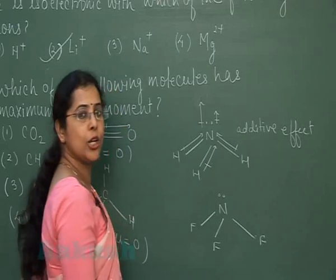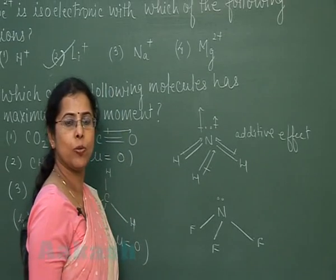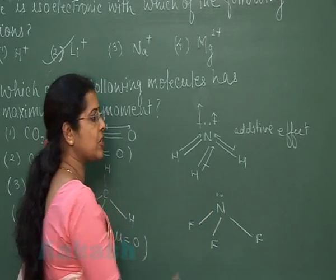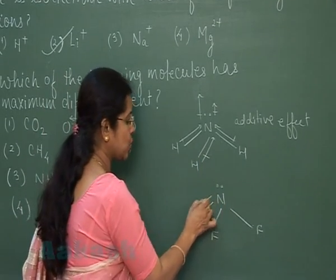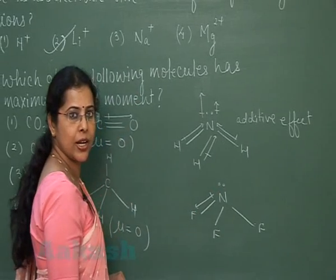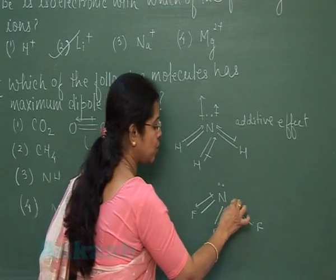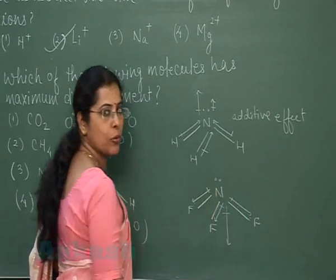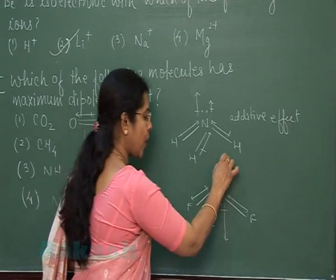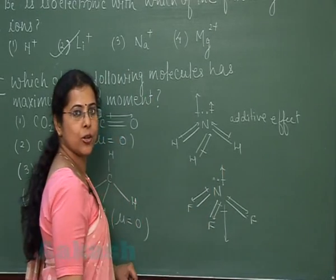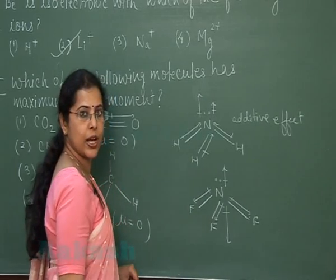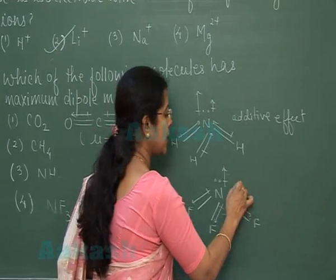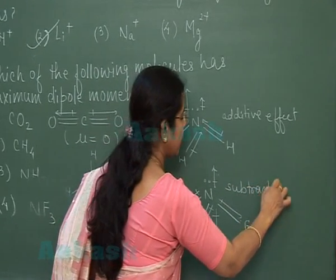It means the polarity of the NH₃ molecule will be more than expected. In the case of NF₃, which has a similar shape, fluorine is more electronegative than nitrogen, so the dipoles are aligned towards fluorine. The resultant of these three polar bonds is in one direction, while the displacement of electrons is in the opposite direction. This is called the subtractive effect.